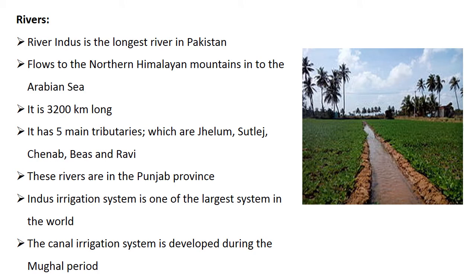There are many rivers in Pakistan. The River Indus is the longest river in Pakistan. It starts flowing from the northern Himalayan mountains near Tibet into the Arabian Sea near Karachi. It is 3,200 kilometers long. The Indus has five main tributaries: the Jhelum, Chenab, Sutlej, Beas, and Ravi — all in the Punjab province, which derives its name from these five rivers. These rivers originate from the valleys of Kashmir and join the River Indus in Punjab.